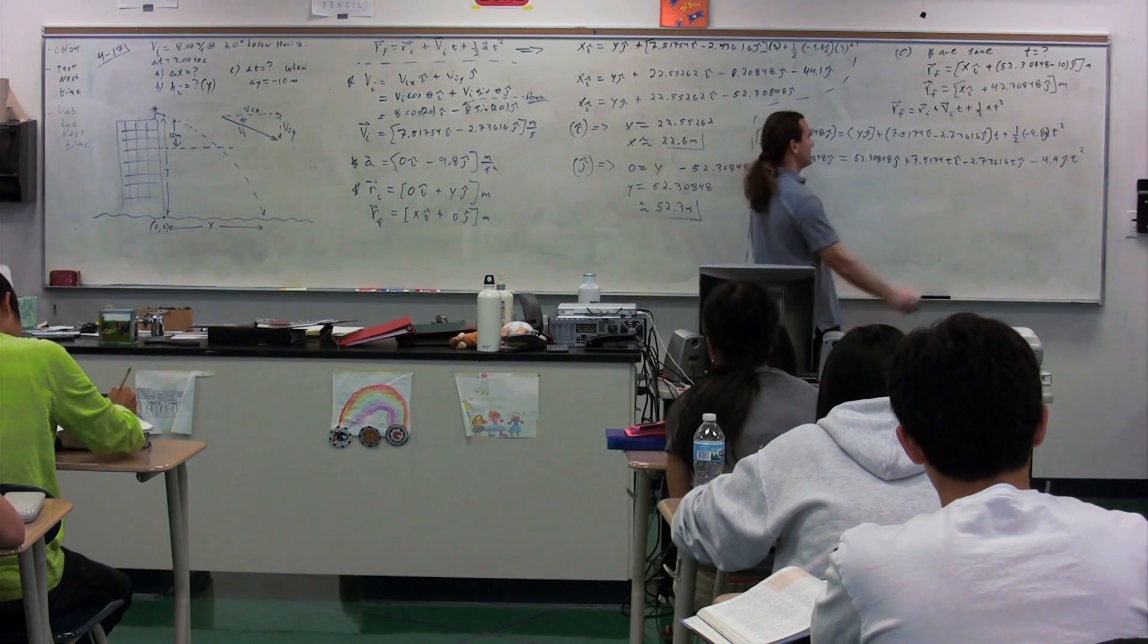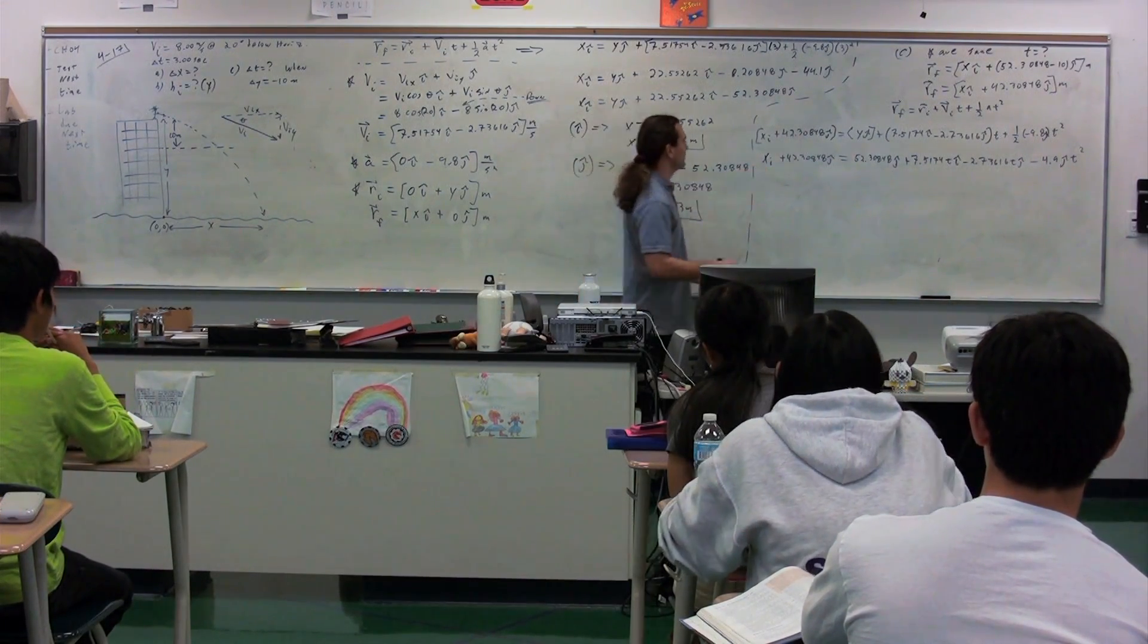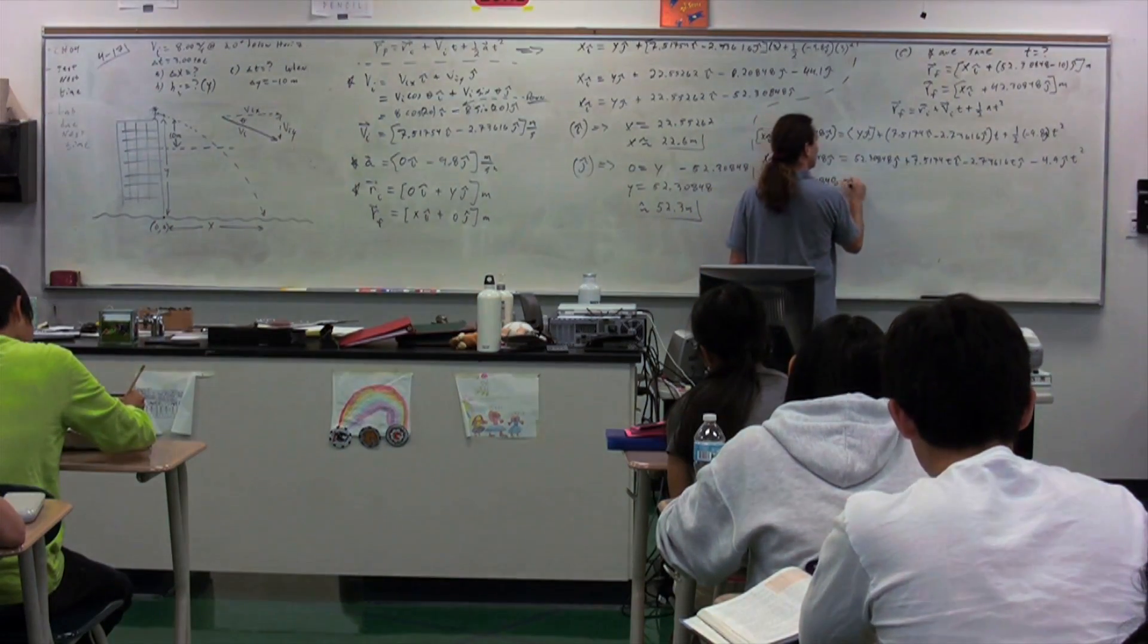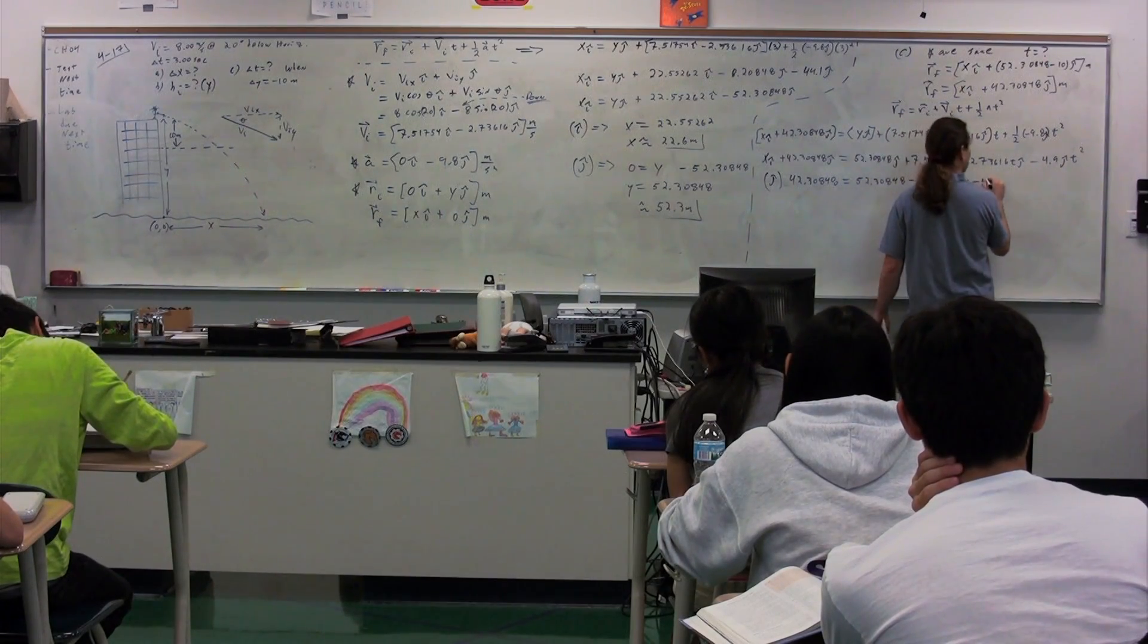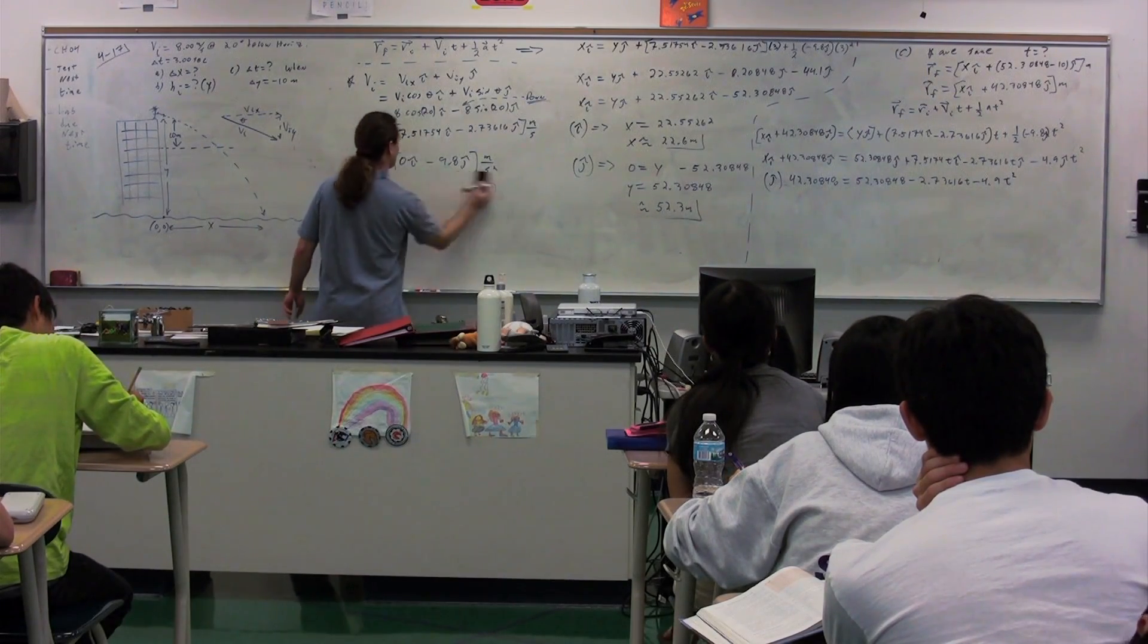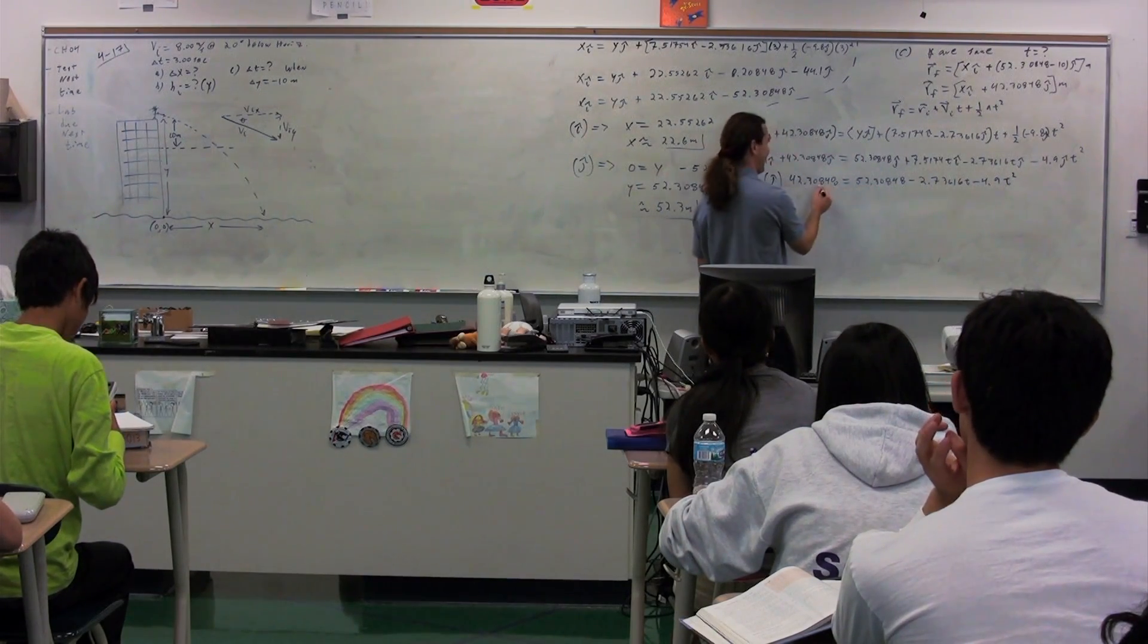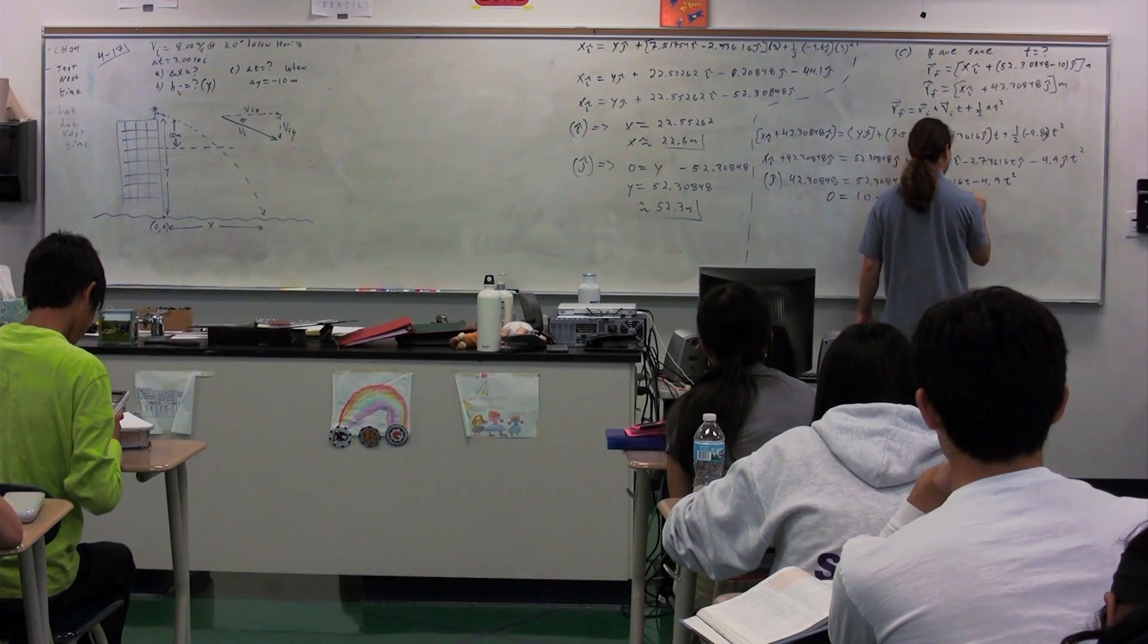Really, we're solving for time. And time is, well, we can't do it in the i direction because we have the unknown x. But we can do it in the j direction. So let's look at the j direction. We get 42.30848 is equal to 52.30848 minus 2.73616t minus 4.9t squared. My guess is that we get 10 when we bring this over to the other side. 0 is equal to 10 minus 2.73616t minus 4.9t squared.